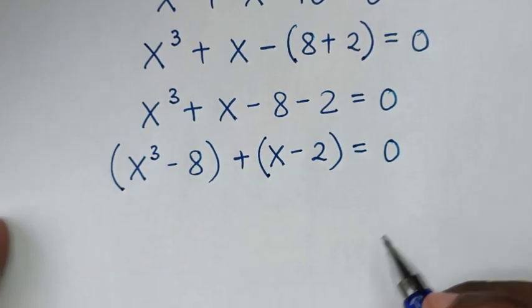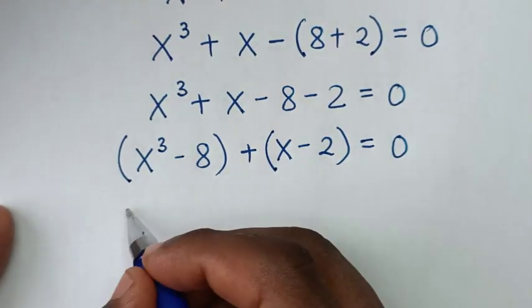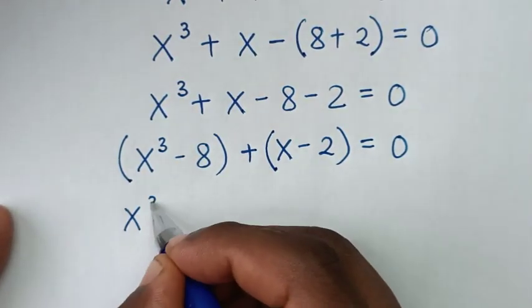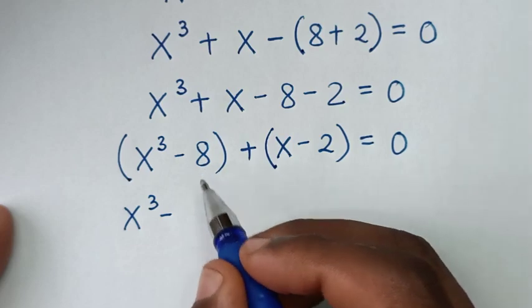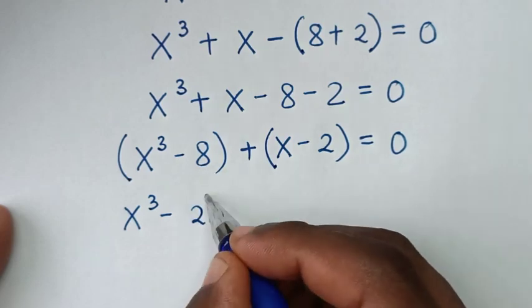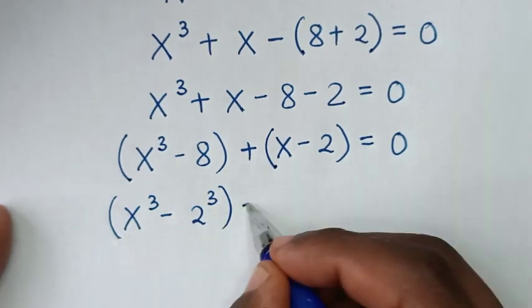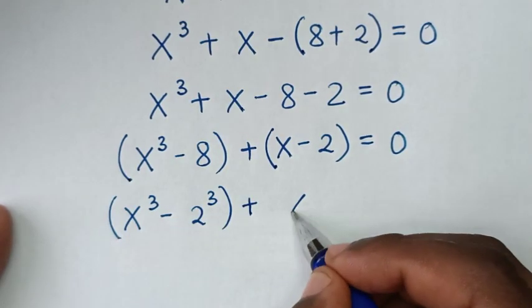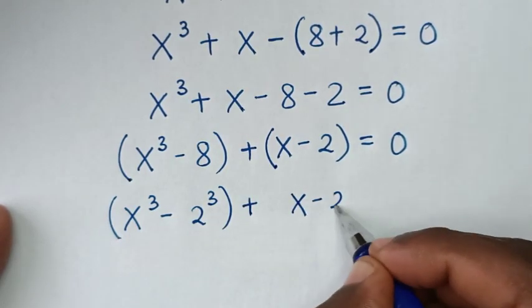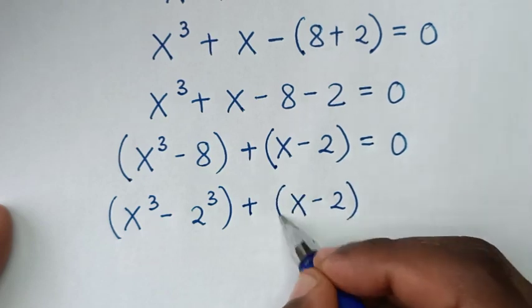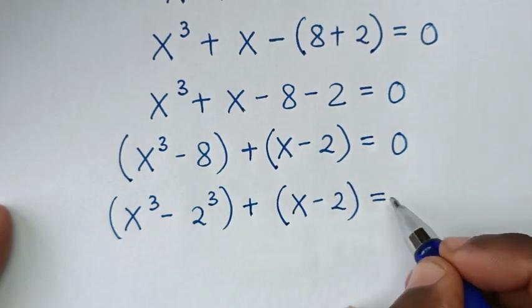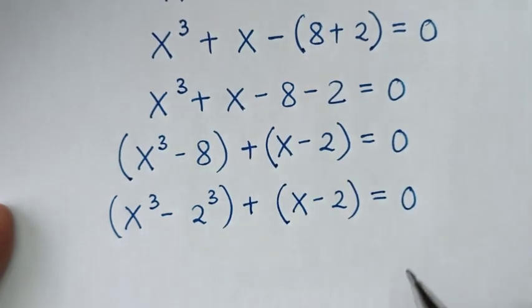Then in the next step, x power 3 minus 8 is the same as 2 power 3, so we have the bracket x power 3 minus 2 power 3, then plus the bracket x minus 2, is equal to 0.